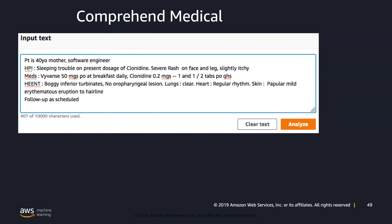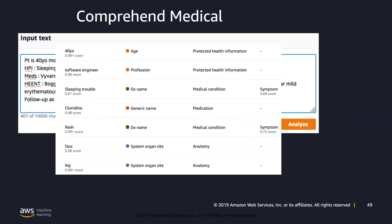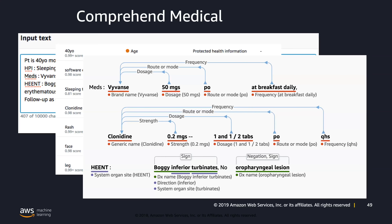Another interesting AI service is Comprehend, which is natural language processing — it understands different parts of speech. Comprehend Medical is a domain-specific version that understands the medical domain. For example, given doctor's notes with abbreviations and misspellings, it still understands what's what: '4-D-Y-O' is the age and protected health information, it can understand professions, medical conditions, anatomy, as well as different types of dosages, their routes or modes, and frequency. If you have a medical use case, check out the medical domain; otherwise, check out regular Comprehend.